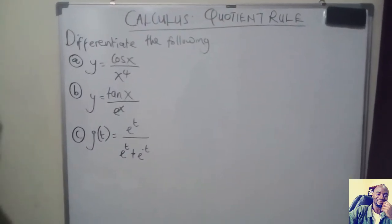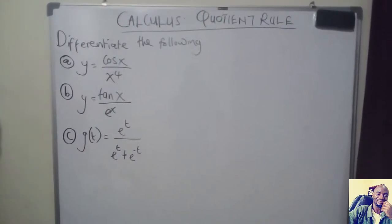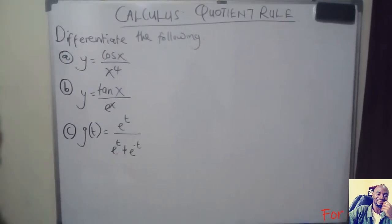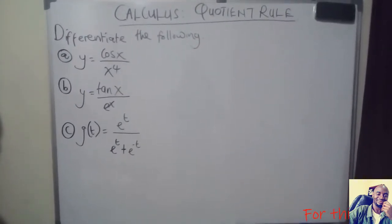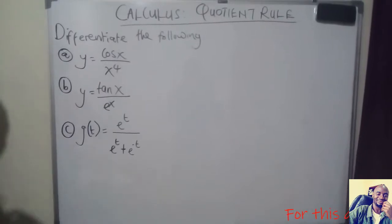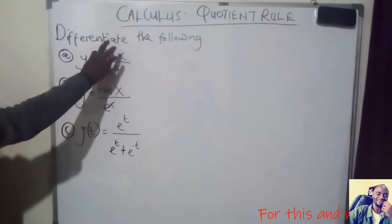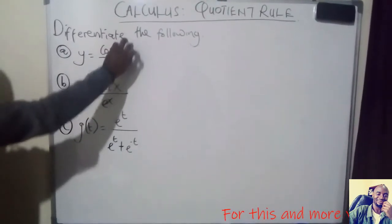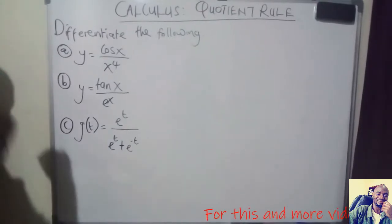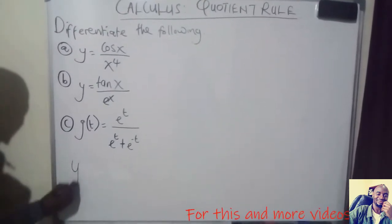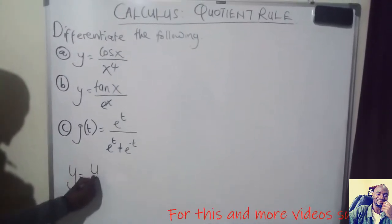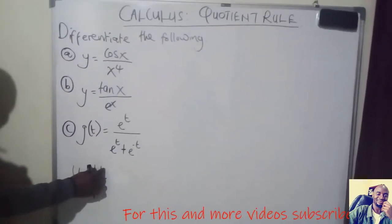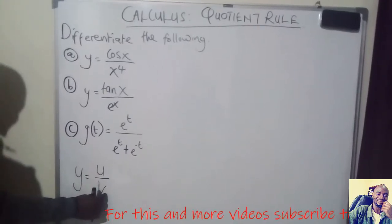In this video, I want to focus on how we can use the quotient rule to differentiate a function that is presented as a quotient. A quotient is simply a fraction. So if we have a function Y presented as a quotient, the numerator we name it U, then the denominator we name it V.